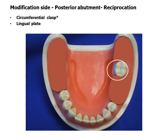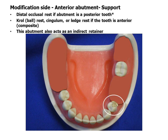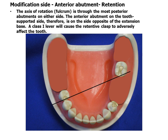Reciprocation is provided with a cast circumferential clasping or lingual plating. The anterior abutment on the modification side requires special consideration because it is situated anterior to the fulcrum line. If it is a posterior tooth, an occlusal rest may be used. If it is an anterior tooth, a ball, ledge, or cingulum rest may be used.